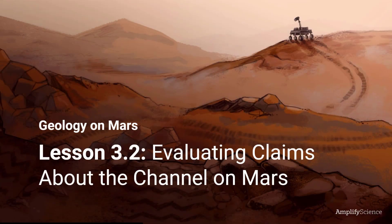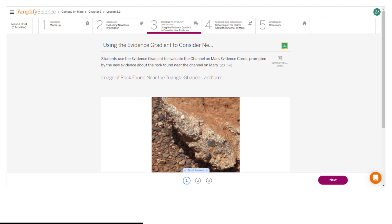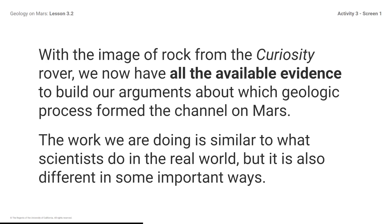Geology on Mars, Lesson 3.2: Evaluating Claims About the Channel on Mars. Activity 3: Using the Evidence Gradient to Consider New Evidence. Here is what your student screen looks like for this part of the lesson. With the image of rock from the Curiosity rover, we now have all the available evidence to build our arguments about which geologic process formed the channel on Mars.